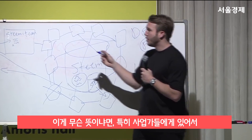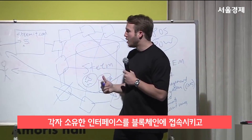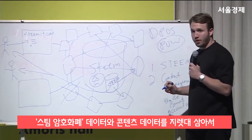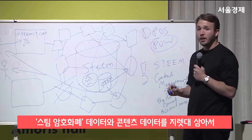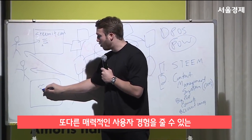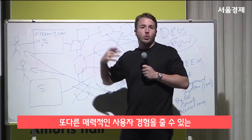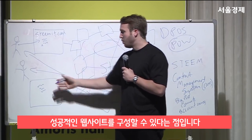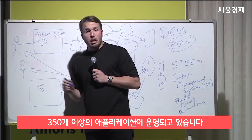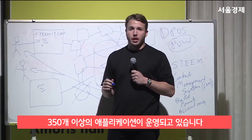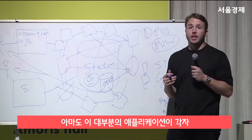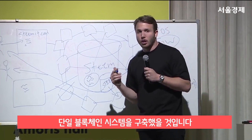What that means is entrepreneurs may get the idea that they can build their own interface, plug it into the blockchain, and leverage these two new data structures — the Steem cryptocurrency data and the content data — to provide some different graphical user experience and attract lots of users to build a successful website. There have been more than 350 applications built on the Steem blockchain, which is up there for being maybe the most applications built on any single blockchain ecosystem.